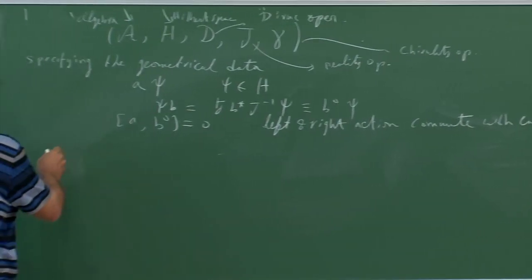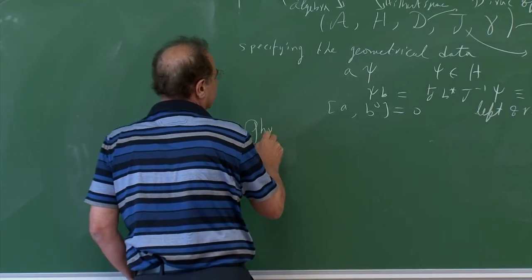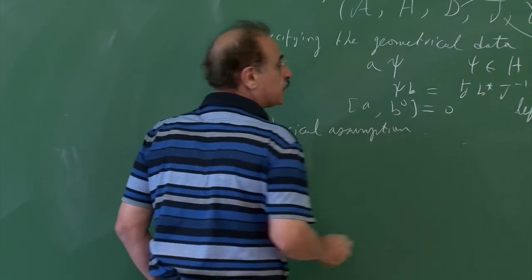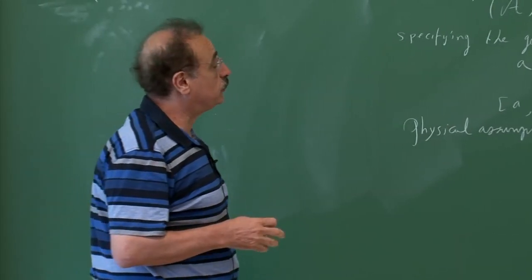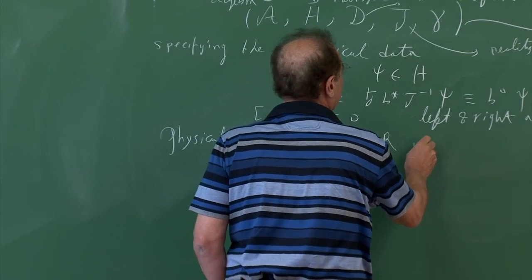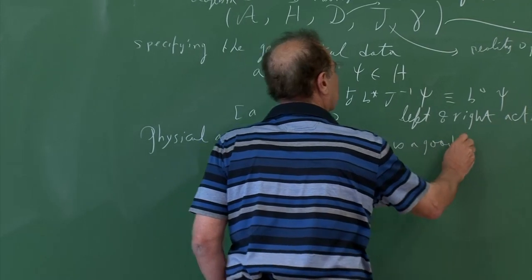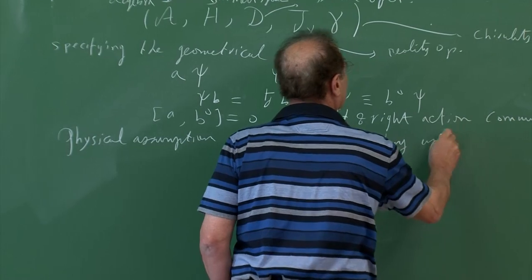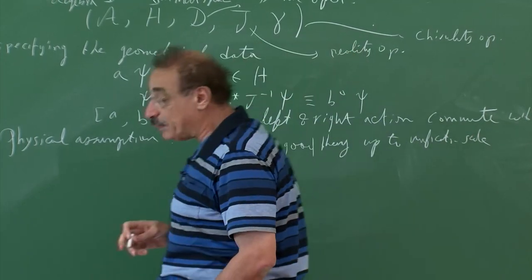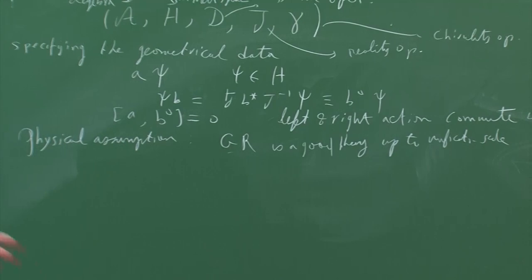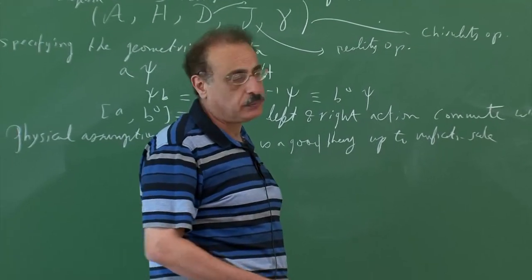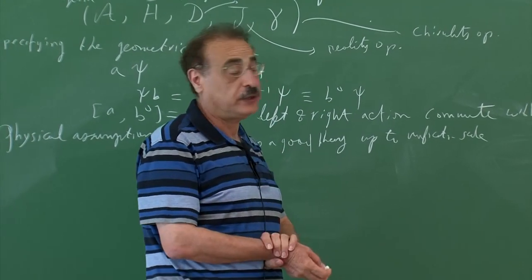After that we made a physical assumption based on the observation that for all practical purposes general relativity is a good symmetry up to the unification scale, and even up to the Planck scale. Beyond the Planck scale it will start to break down because one has to include higher-order corrections, or maybe the whole idea of continuous geometry will break down.